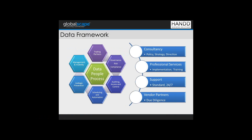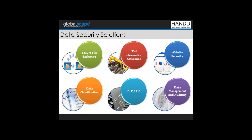All our solutions are supported by a range of core services that include consultancy — helping organisations understand and devise a solid data protection policy, strategy and direction — a range of professional services including software implementation, integration, training, and 24-hour support. It's also worth noting that we select our vendor partners very carefully, only working with leaders in the sector. Our data security solutions include secure file exchange, SSH information assurance including SSH user key management, website security, data classification, data loss prevention and enterprise information protection, as well as data management and auditing. We really are a one-stop shop for all your data security and compliance needs.